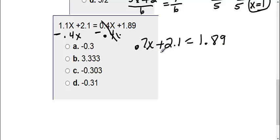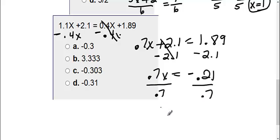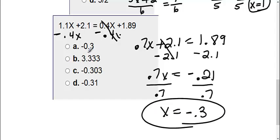So again, I still need to get this x by itself. Before I can get to the x, I need to move this positive 2.1. So I'm going to subtract 2.1 on both sides. This side is gone. I get 0.7x. Now, 1.89 minus 2.1 is going to give me a negative 0.21. Then I need to get x by itself, so I need to get rid of this 0.7. It's 0.7 times x, so to get rid of it, I do the opposite. I'm going to divide by 0.7. So negative 0.21 divided by 0.7 is going to give me a negative 0.3 as my final answer, which is choice A.